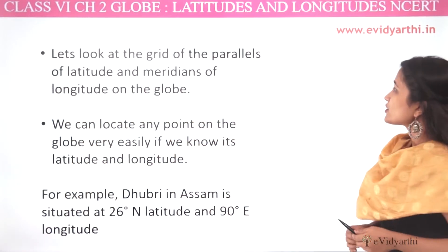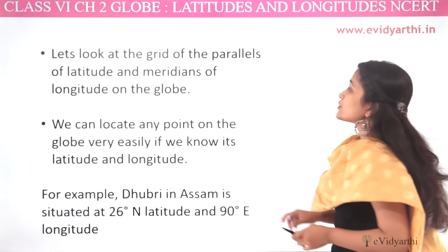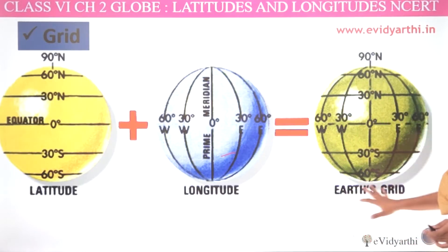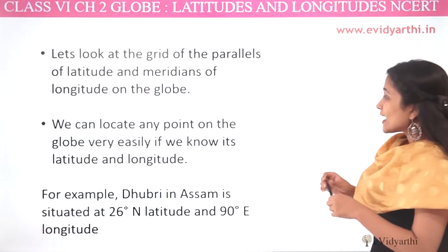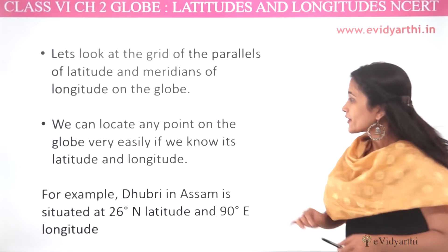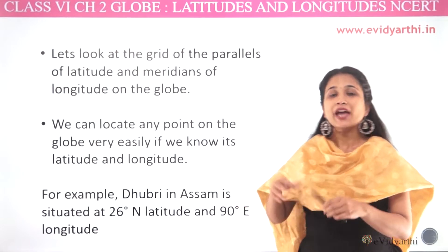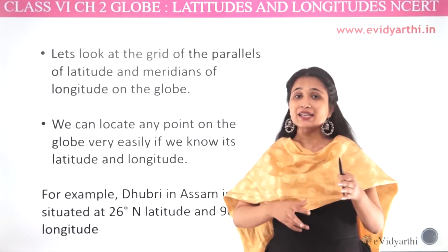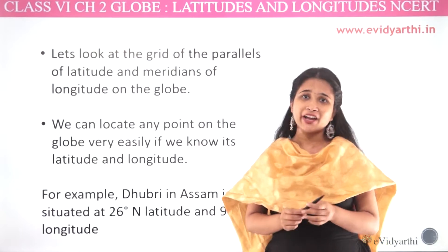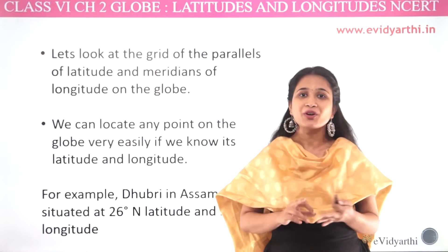Let's look at the grid of the parallels of latitude and meridians of longitude on the globe. Here, you can see a grid system. A grid is showing longitude and latitude. Because you can see any point on the globe very easily, we know its latitude and longitude, so we can find the location of any place.